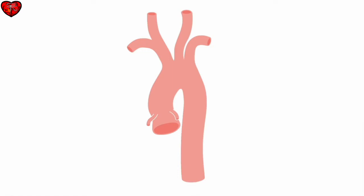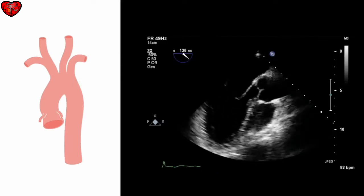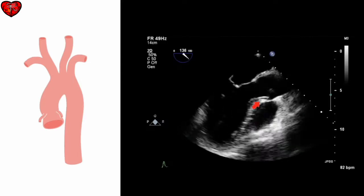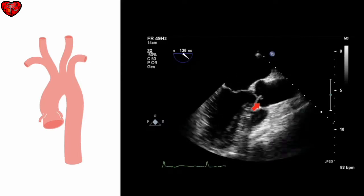The one exception to this is the distal ascending aorta and proximal aortic arch, and for reasons that we'll see later in this lesson, this area can be difficult to visualise on TEE.